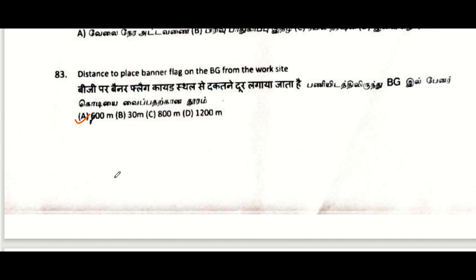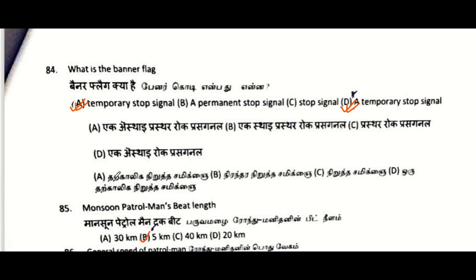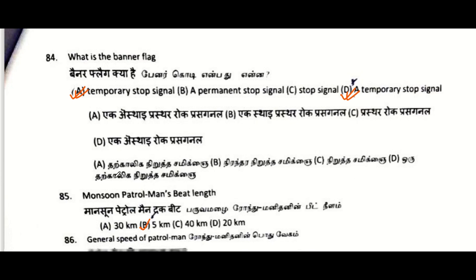Distance to place banner flag on BG from the work site: 600 meters. What is a banner flag? A banner flag is a temporary stop signal. Options A and D look equal so both may be the right answer.